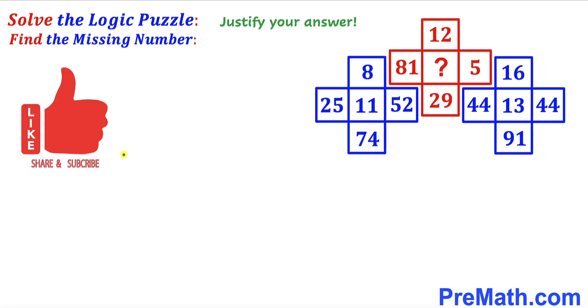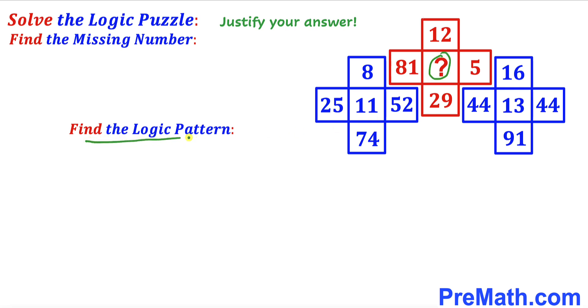Let's go ahead and get started. Before we could find this missing number we must find the logic pattern for this puzzle. Here's our very first step. Let's focus on this left hand side blue grid and make an observation. Let's add these three numbers: 8 plus 25